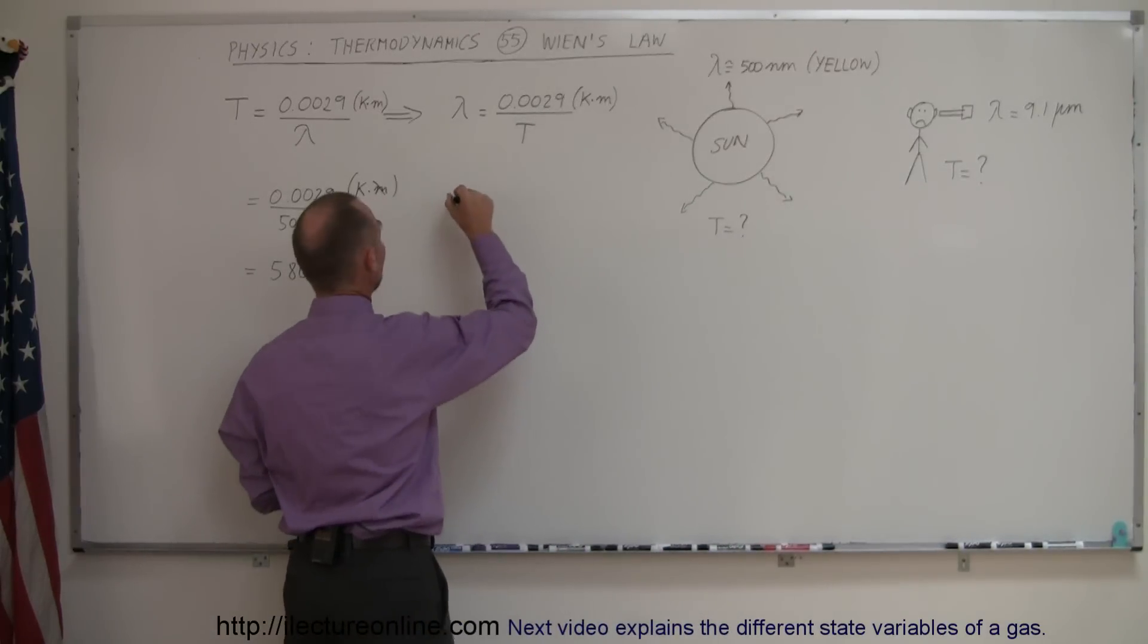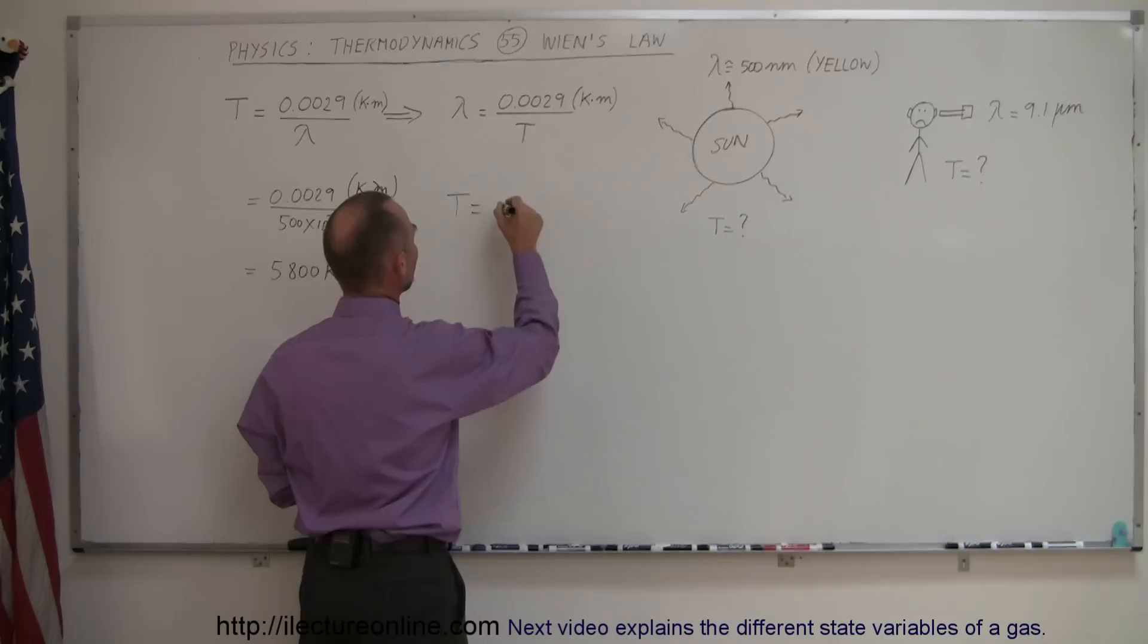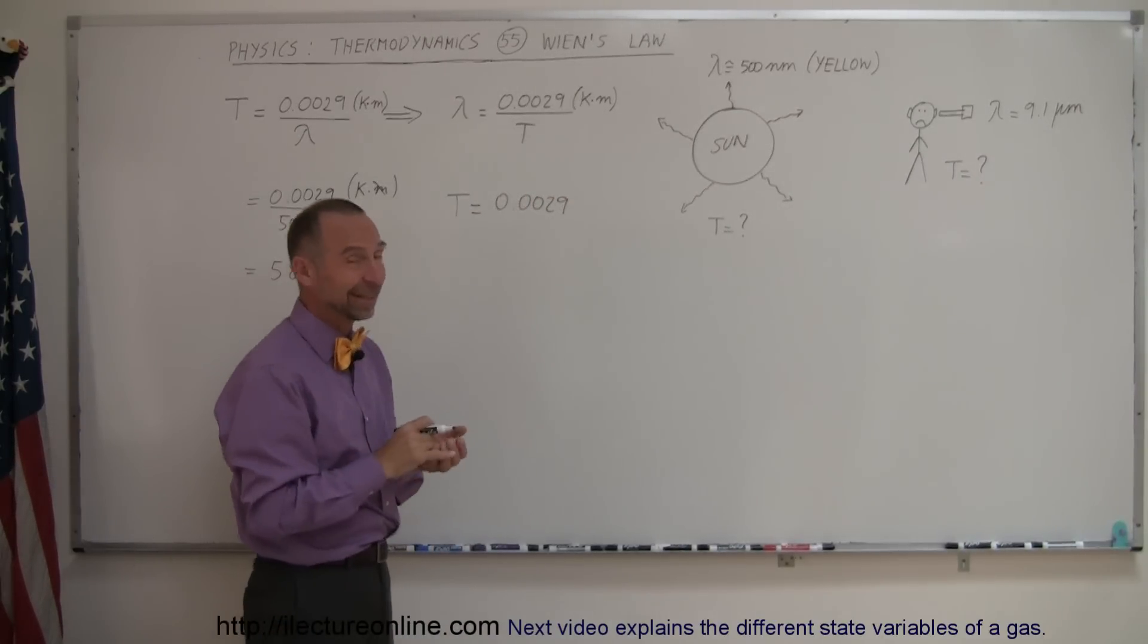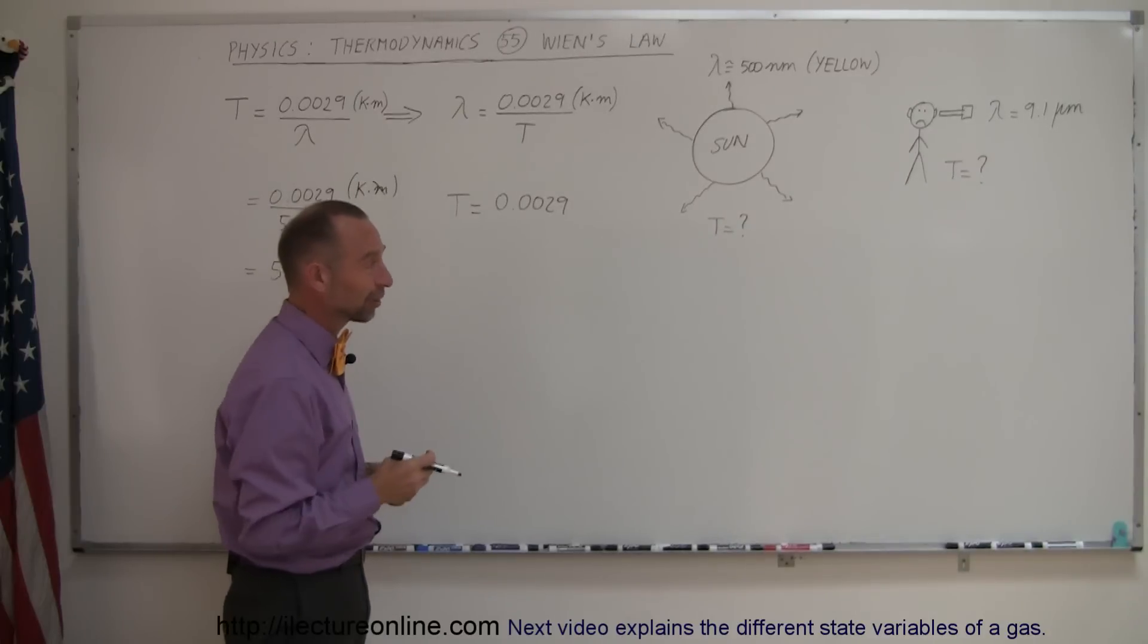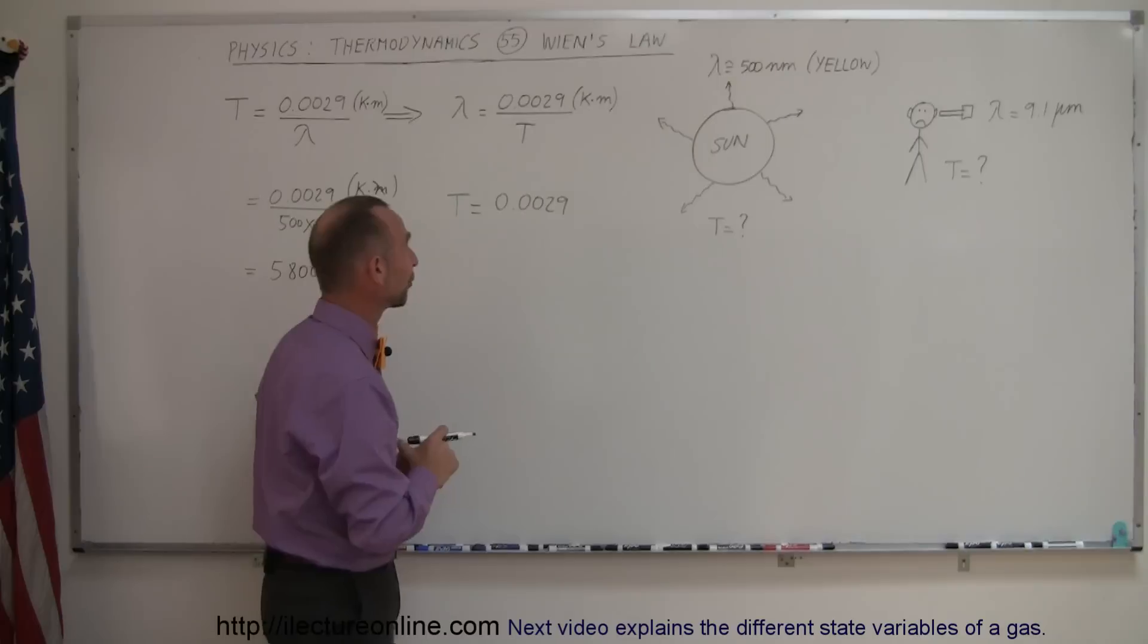So let's see the doctor says your temperature therefore is 0.0029 of course your doctor doesn't pull out a calculator and start calculating. The thermometer has of course a little computer in there that automatically calculates it for you already.